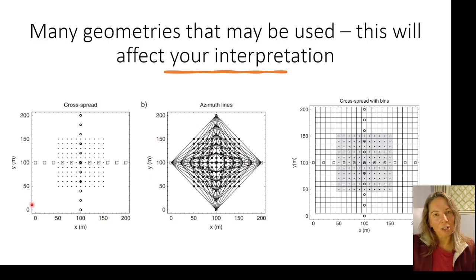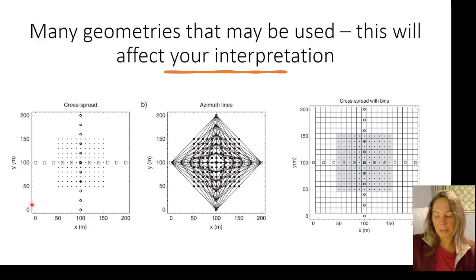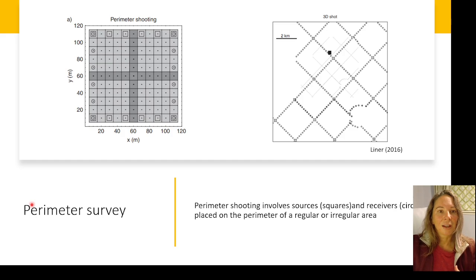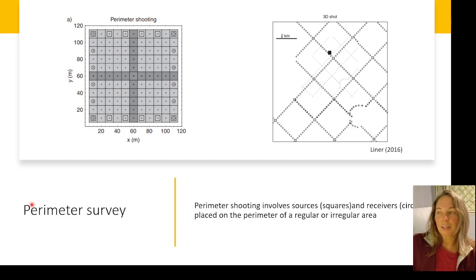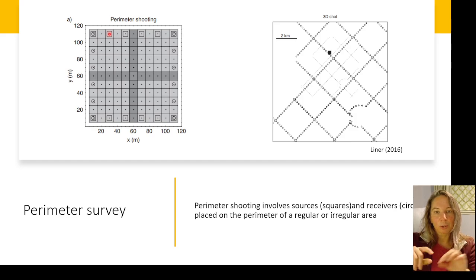Survey geometry can also vary a lot in land acquisitions, depending on the terrain, obstacles, cost constraints, and equipment constraints. One variation is cross-spread shooting, shown here, which was first done back in the 1970s. Perimeter shooting is another method involving sources — shown as squares in this image — shot and placed around a regular or even irregular area depending on what you're trying to shoot.